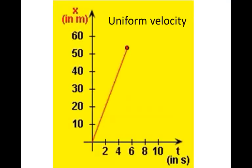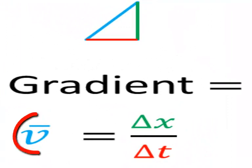For uniform velocity, a position time graph is a straight line with a slope. The slope, the gradient, tells us the velocity.